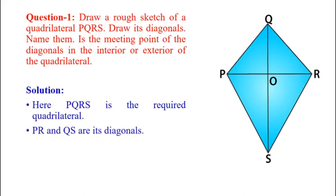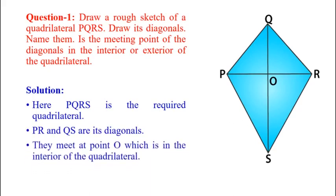PR and QS are its diagonals. They meet, that means the two diagonals meet at point O, which is in the interior of the quadrilateral.